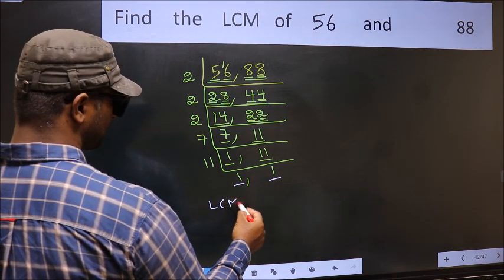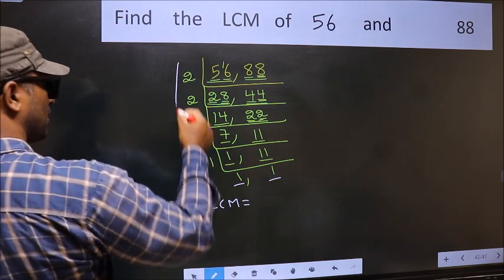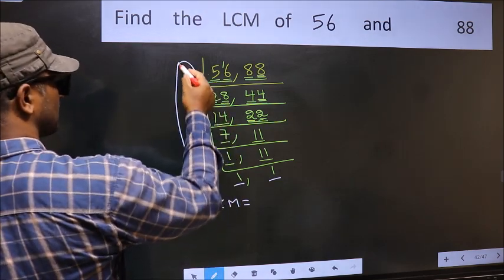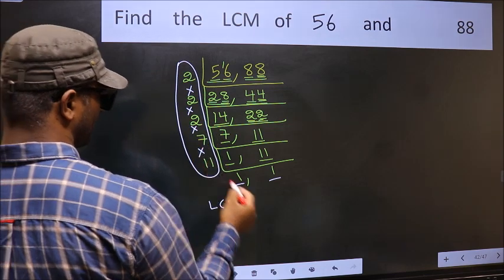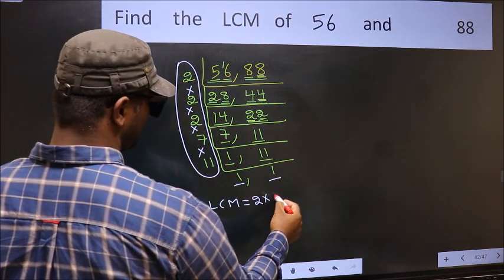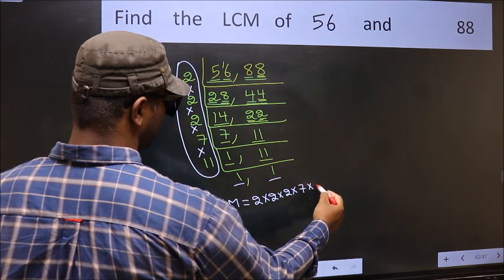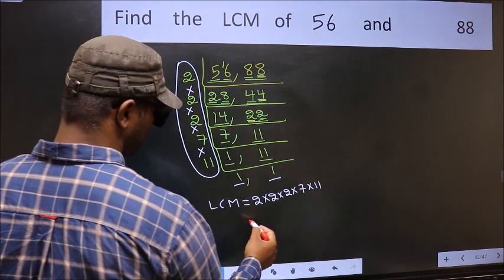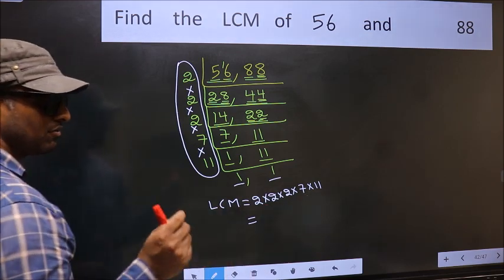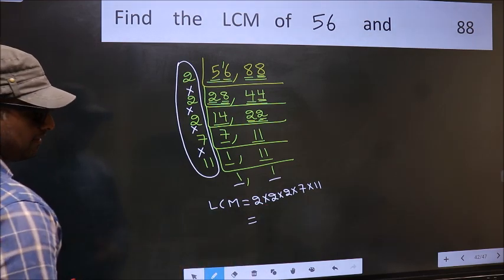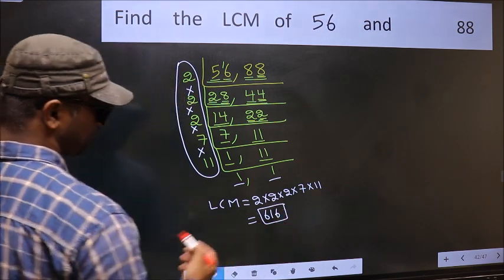So our LCM is the product of these numbers: 2 times 2 times 2 times 2 times 2 times 7 times 11. When we multiply these numbers, we get 616 — that is our LCM.